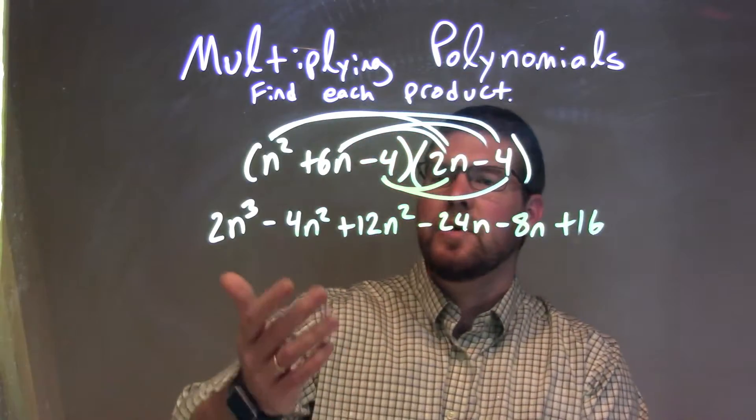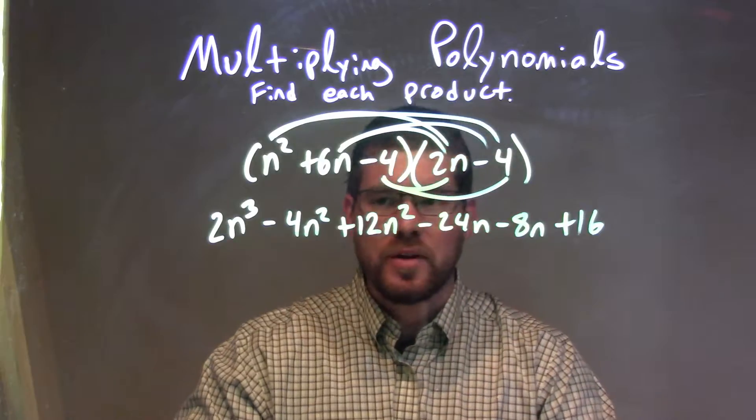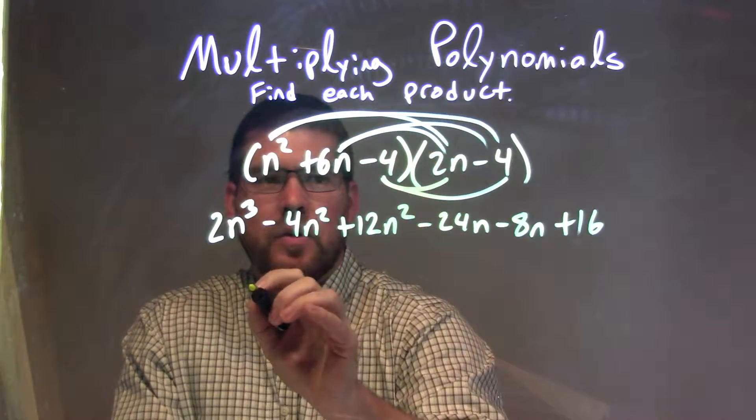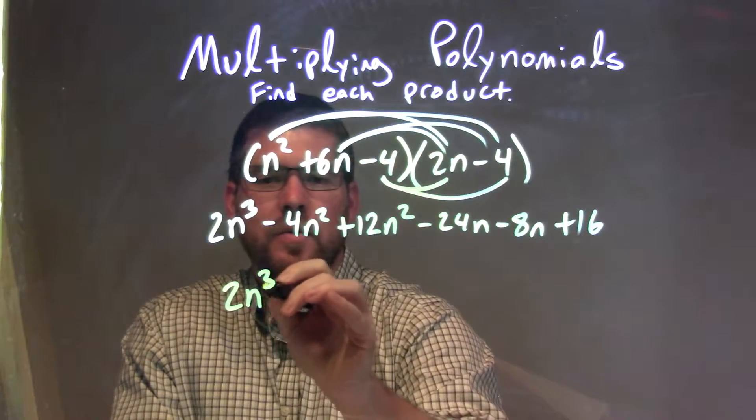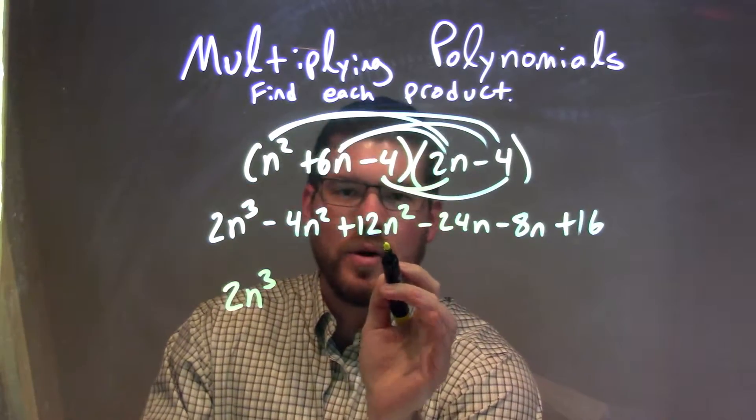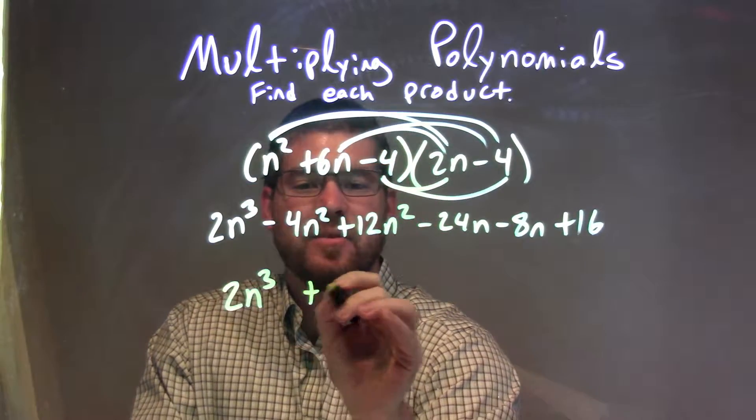So now what we want to do is combine our like terms together. There's nothing with n to the third power, so we just have 2n to the third there. But minus 4n squared plus 12n squared comes out to be a positive 8n squared.